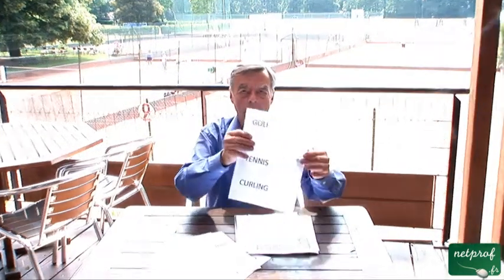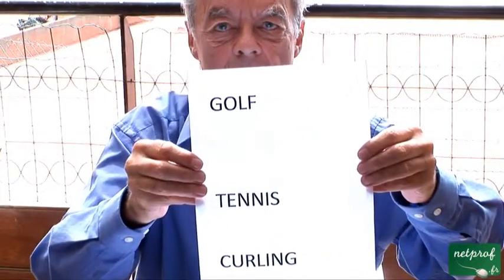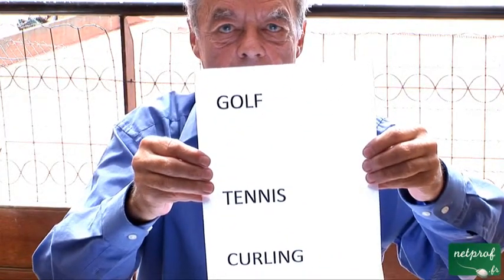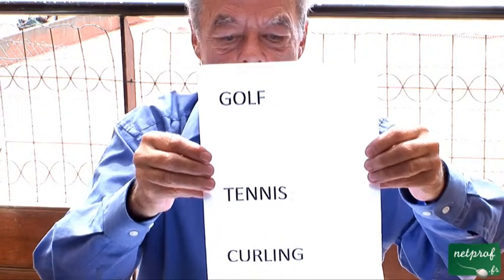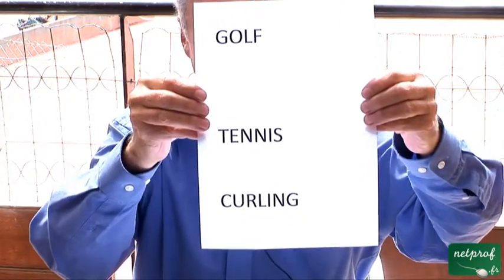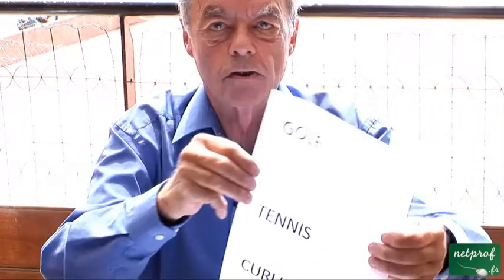It goes back, as we'll explain, to Roman times. And, of course, golf, tennis, and curling, which is a sport that you play on ice. We've got pictures to illustrate all of these sports with vocabulary associated with them.